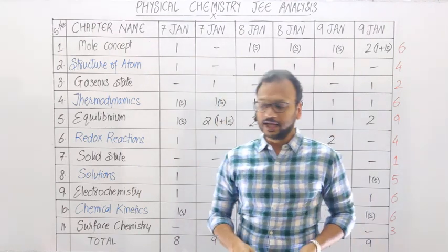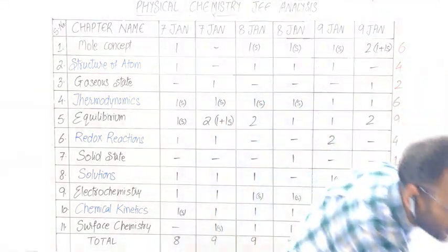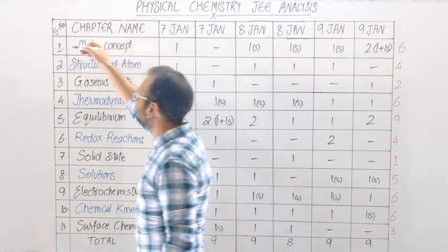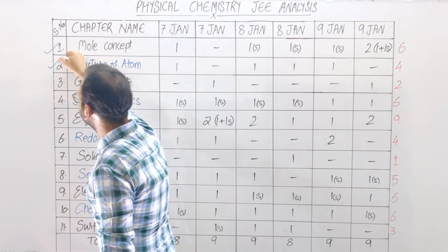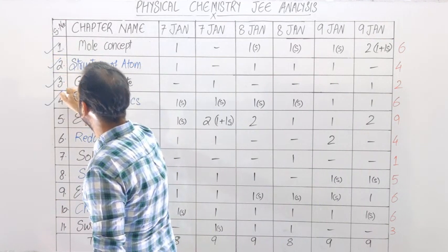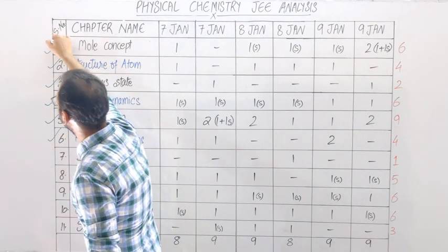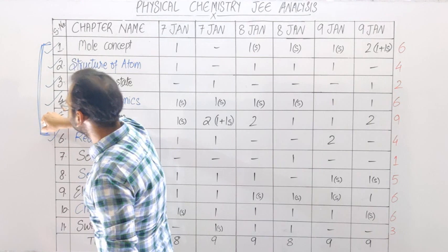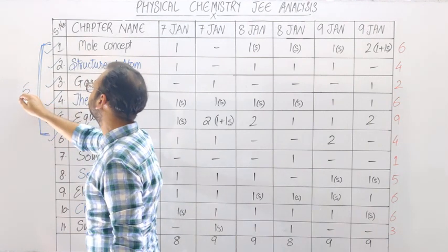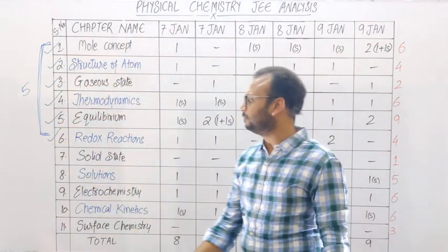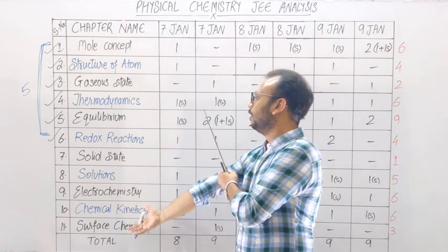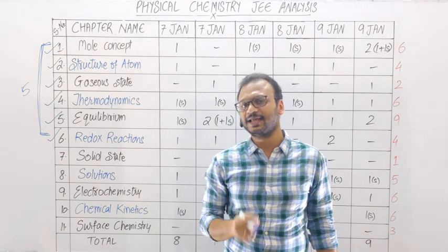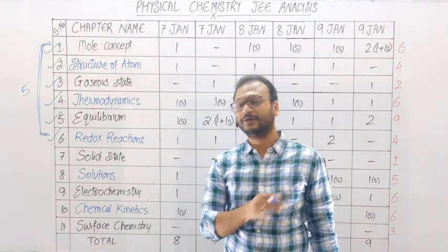Jaise ki humne pichli video mein discuss kiya tha ki inorganic mein bhi total number of questions 8 to 9 hi the. Yani poore chemistry section mein sabse zyada weightage inorganic ki hai, uske baad physical ki, aur sabse kam weightage organic ki hai. Ab concept-wise baat karein toh 11th ka part — mole concept, structure of atom, gaseous state, thermodynamics, equilibrium aur redox — ye jo 6 chapters hain, inse 9 mein se 5 questions mostly aate hain. Baaki 4 questions 12th waale part mein se hain. 11th ki weightage zyada hai as compared to 12th.